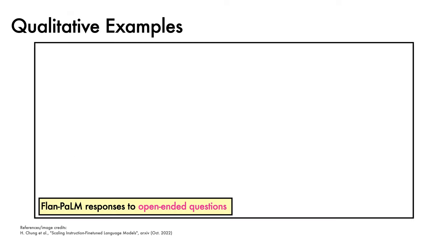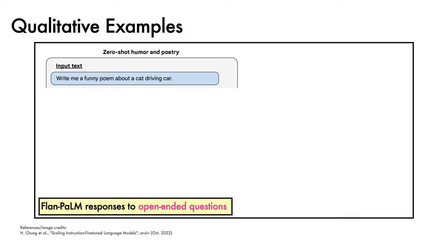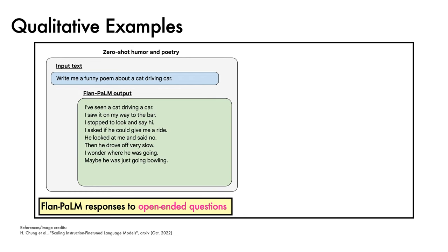We'll next look at some example outputs from the Flan-PaLM model in response to open-ended questions. Note that these have been manually selected, rather than randomly sampled. The first explores zero-shot humour and poetry. The input text is: "Write me a funny poem about a cat driving a car." The Flan-PaLM output is: "I've seen a cat driving a car. I saw it on my way to the bar. I stopped to look and say hi. I asked if he could give me a ride. He looked at me and said no. Then he drove off very slow. I wonder where he was going. Maybe he was just going bowling."